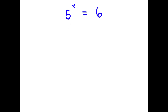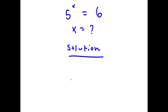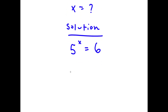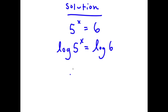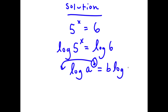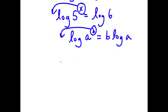So in this problem, I have 5 to the power of x is equal to 6, and I want to find the value of x. I'm going to take the log on both sides, so now I have log 5 to the power of x is equal to log 6. Using the rule that log a to the power of b equals b times log a, I can move the exponent x to the front. So this gives x times log 5 equals log 6.